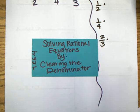This video is on solving rational equations by clearing the denominator. We are going to find a number such that when you multiply every term in the equation, the fractions will cancel out.